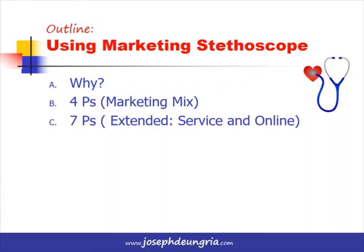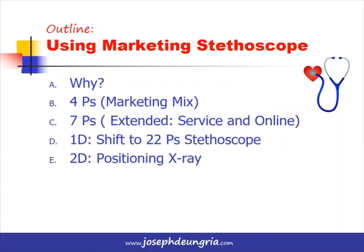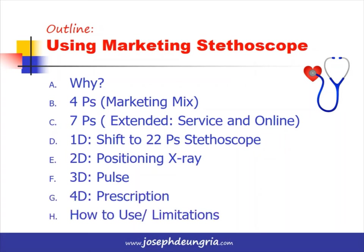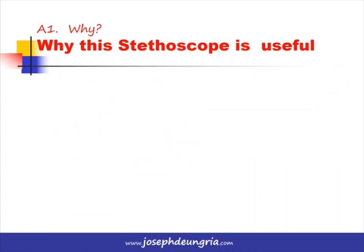We will go back to the marketing mix or the 4Ps — there's also the 7Ps or the extended marketing mix used for service and online marketing. We propose that there are four dimensions to using the marketing stethoscope: the first dimension involves the 22Ps; the second goes in depth to positioning or the positioning X-ray; the third is getting the pulse; the fourth is a prescription. Lastly, we cover how to use this model, its process, and its limitations.